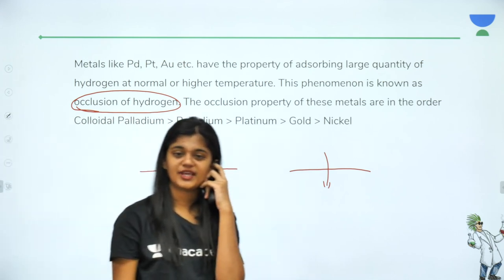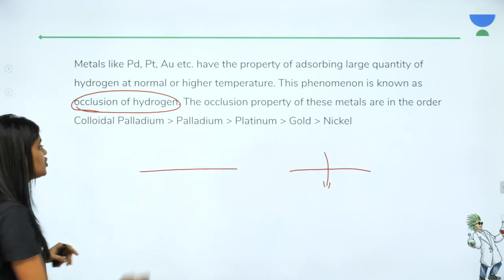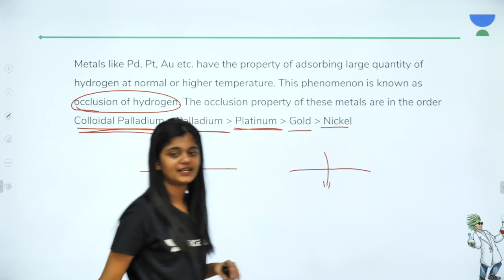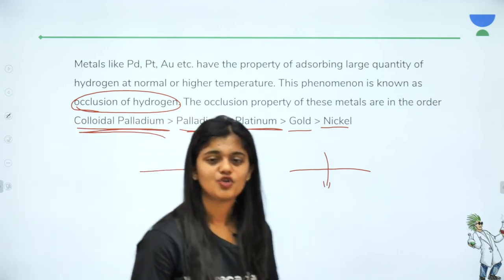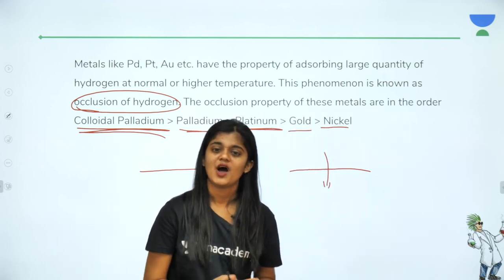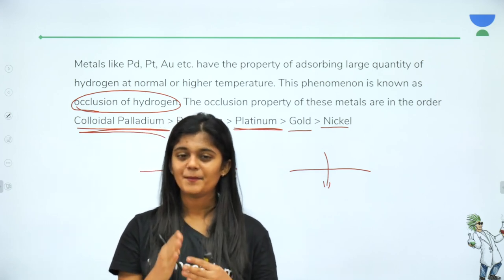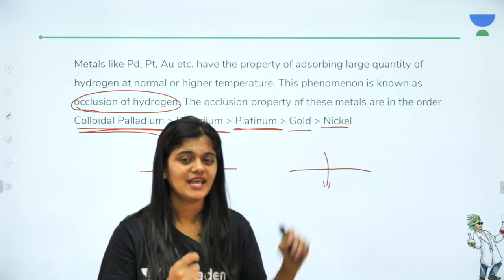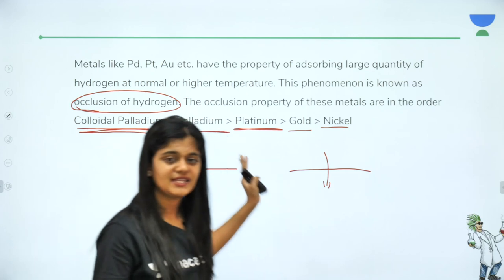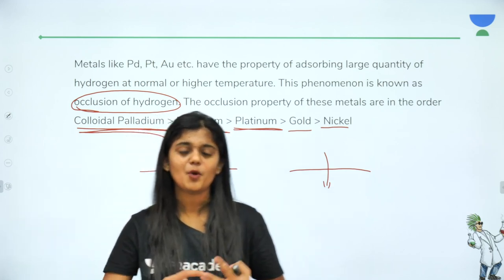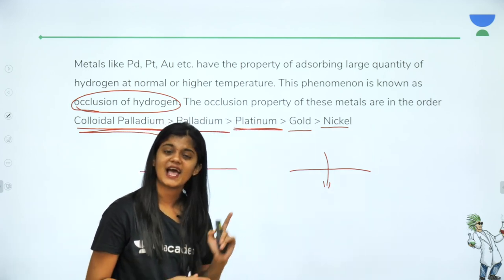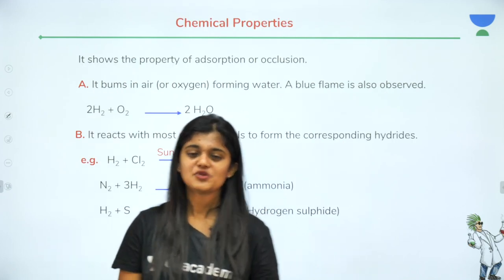The rate of occlusion is highest for colloidal palladium, followed by palladium, platinum, gold, and nickel. Occlusion is the ability of the metal to adsorb large quantities of hydrogen at normal or higher temperatures. This becomes very important in reduction reactions in higher classes, because when you adsorb hydrogen onto these metals, you can supply large quantities of hydrogen in catalytic processes, making reduction quite fast.